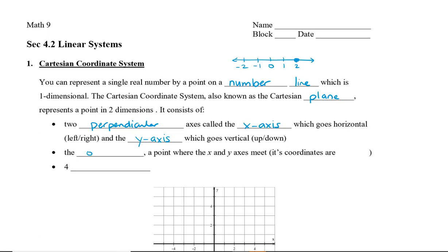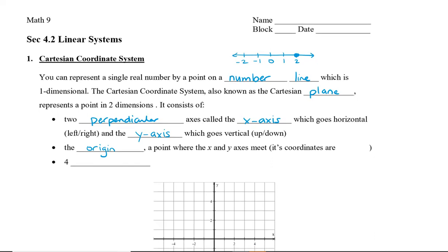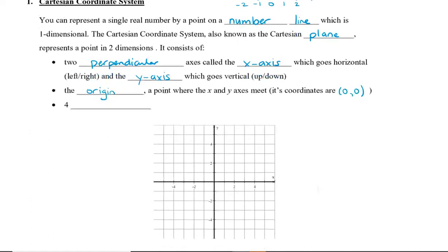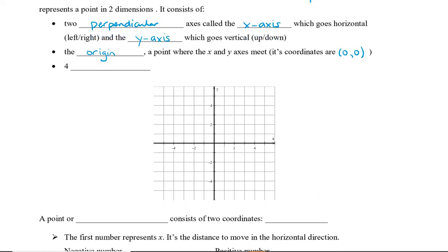The origin is an important point because that is the point where the x and the y-axis meet. The coordinates of the origin are 0, 0. Taking a look at this Cartesian plane, we can label this point where the x and the y-axis meet as the origin, and that's (0, 0).